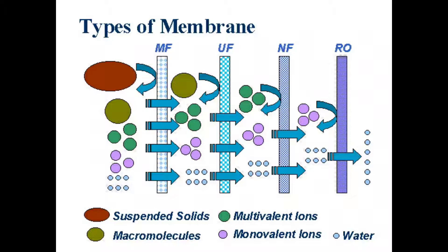In the figure, there are suspended solids, macromolecules, multivalent ions, monovalent ions, and water. In microfiltration, only suspended solids are rejected while macromolecules, multivalent ions, and monovalent ions pass through. In ultrafiltration, suspended solids and macromolecules are rejected while multivalent and monovalent ions pass through. Reverse osmosis rejects all suspended solids, macromolecules, multivalent ions, and monovalent ions — only pure water passes through the membrane.